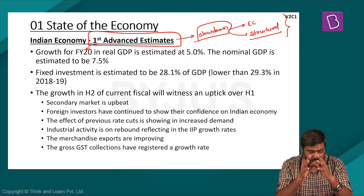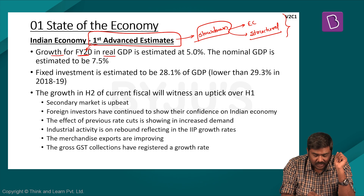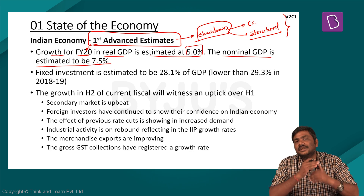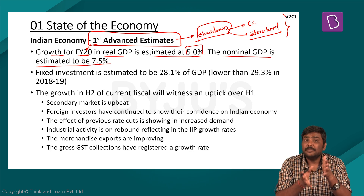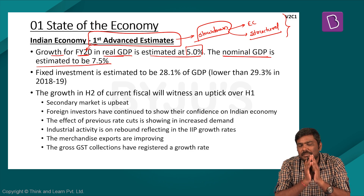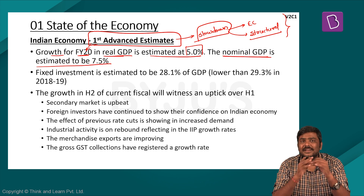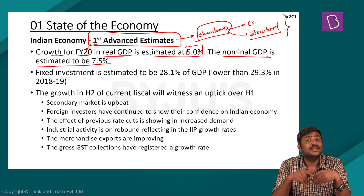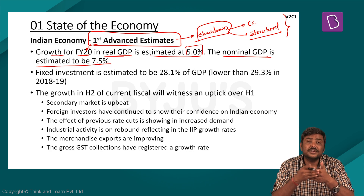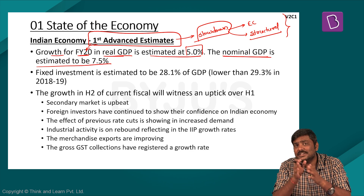As per the Economic Survey, the first advanced estimates state that real GDP growth for FY20 is estimated at around 5% and nominal GDP at around 7.5%. Nominal GDP is calculated by taking the present market value of goods and services. When GDP is calculated taking into consideration current prices, it is called nominal GDP.